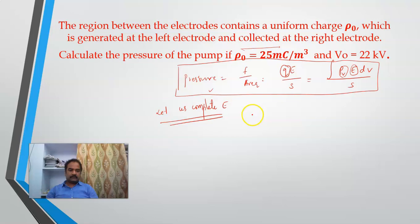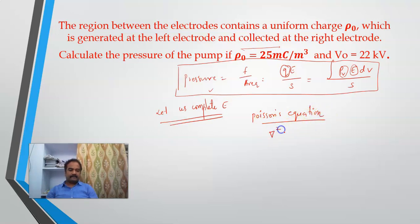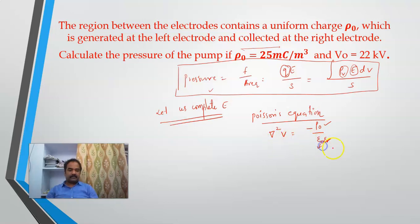This region can be simplified using Poisson's equation. Since there is a charge inside it, I am using Poisson's equation — otherwise I would use Laplace's equation. Poisson's equation states that del squared V equals minus rho naught over epsilon, where epsilon is epsilon naught times epsilon r — permittivity of free space times relative permittivity.